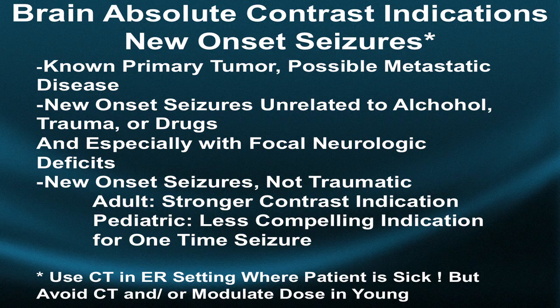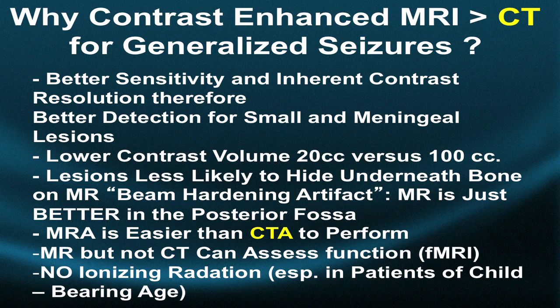I would always use a CT scan in the emergency room where the patient is sick and unlikely to be cooperative for an MRI, which takes longer. Avoid CT or modulate the radiation dose in young pediatric patients and individuals of childbearing age. Why would you use contrast-enhanced MRI over CT for generalized seizures?